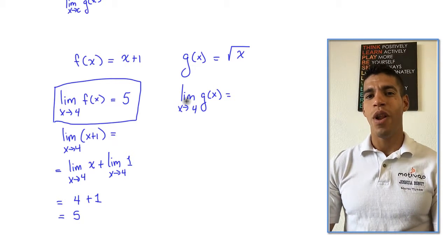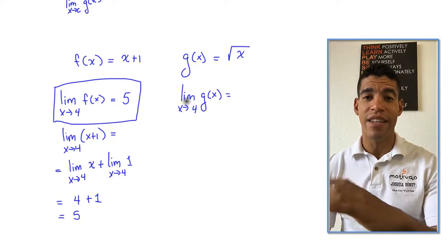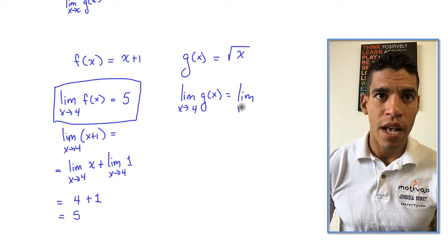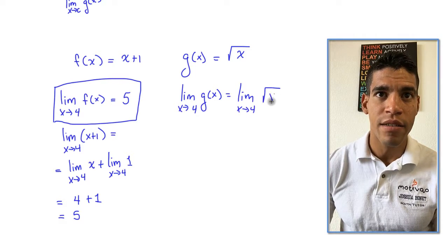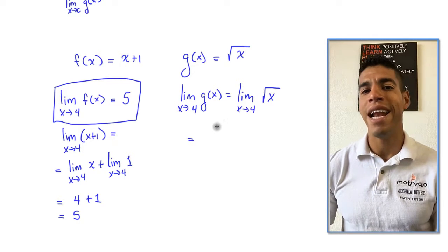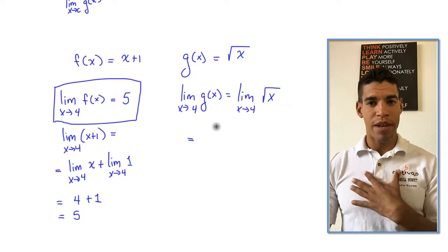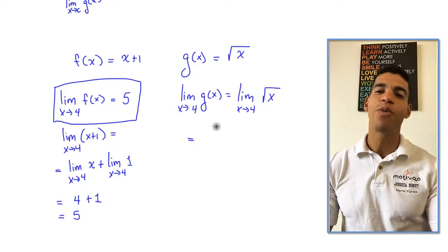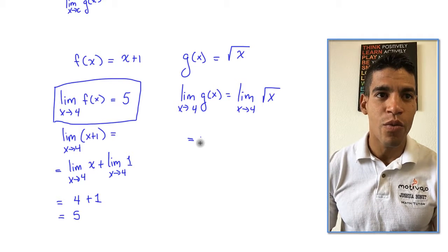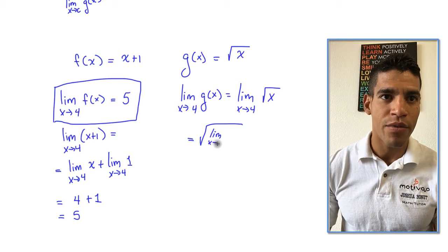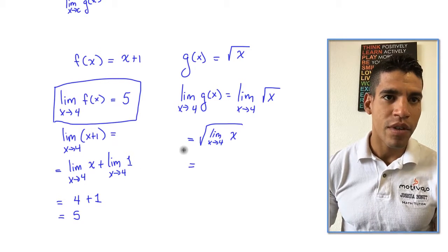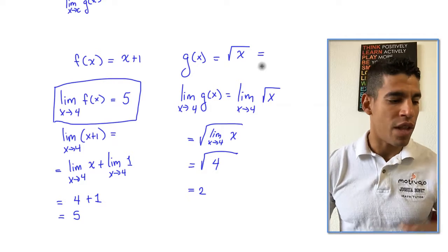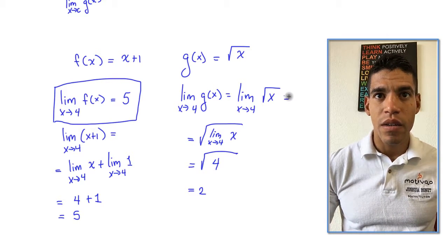For g(x): we use the fact that you can move the limit inside a composition of functions. The limit as x approaches 4 of √x equals the square root of the limit as x approaches 4 of x, which we know is 4. The square root of 4 is 2. So the limit of g(x) is 2. Now we have the values of both limits: L = 5 and M = 2.